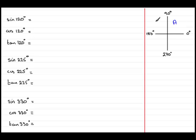Between 90 and 180, only sine is positive. Between 180 and 270, tan is positive. And between 270 and 360, cosine is positive. This is called the quadrant rule.